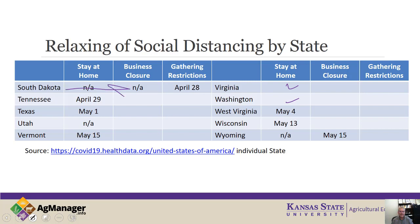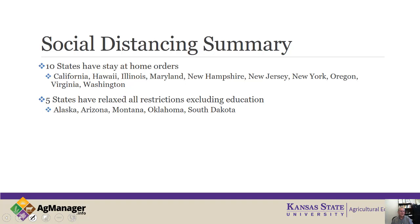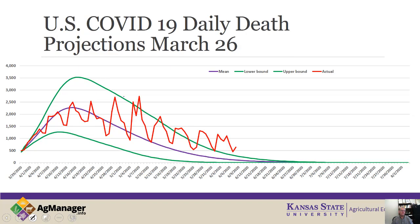Ten states still have stay-at-home orders: California, Hawaii, Illinois, Maryland, New Hampshire, New Jersey, New York, Oregon, Virginia, and Washington. Five states have relaxed all restrictions excluding education: Alaska, Arizona, Montana, Oklahoma, and South Dakota. One or two states left education decisions up to localities. As states begin to relax educational restrictions, we'll start tracking that more closely. Currently, pretty much everybody has restrictions on education.